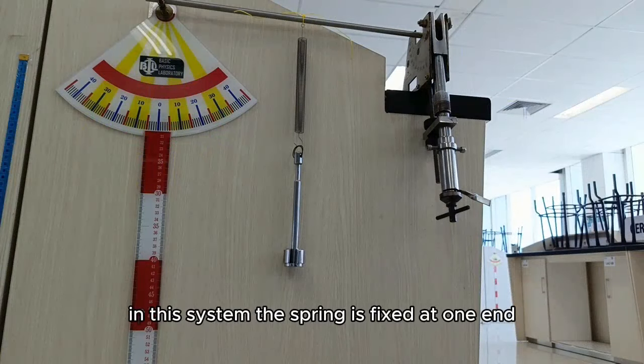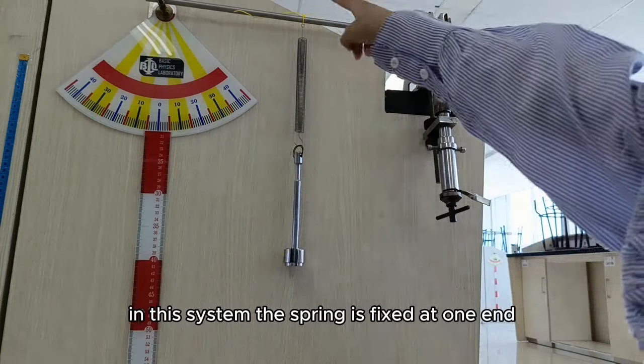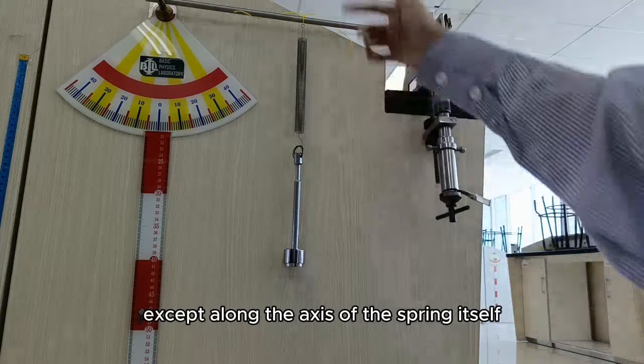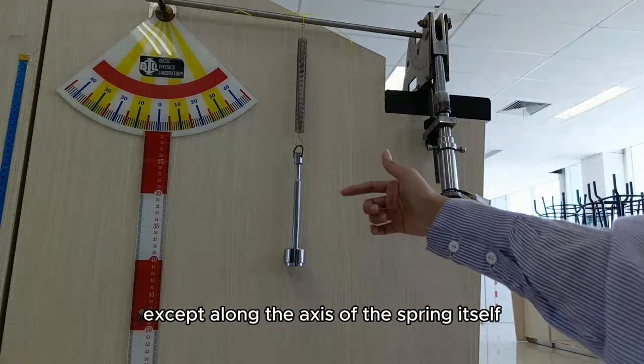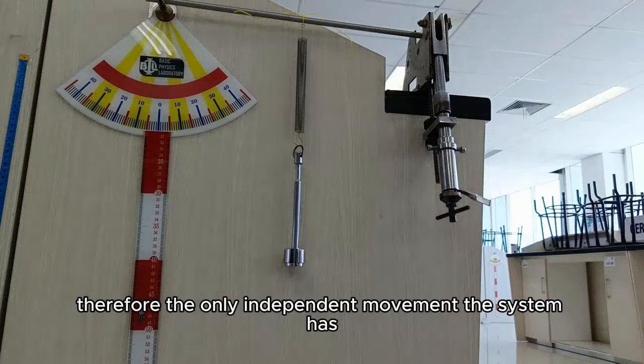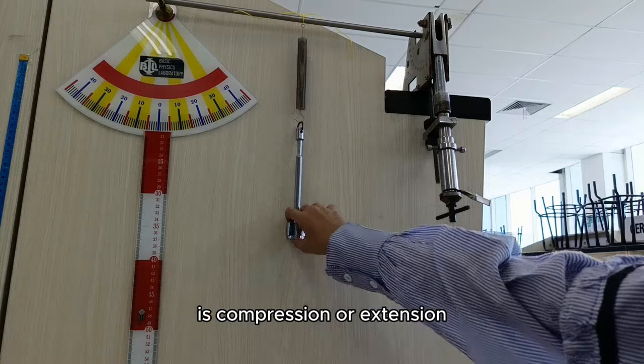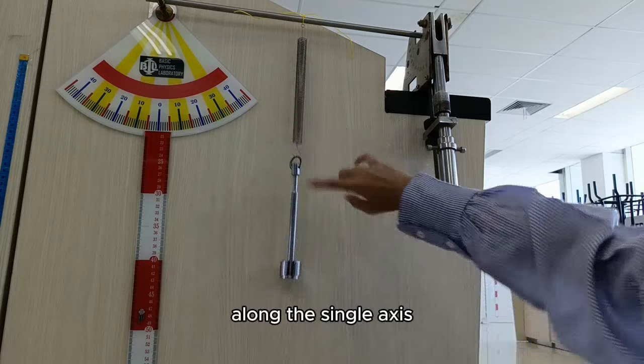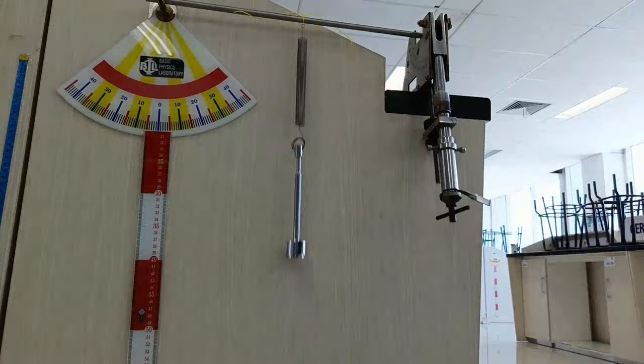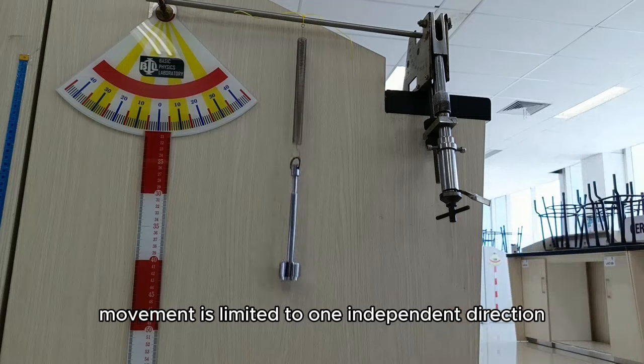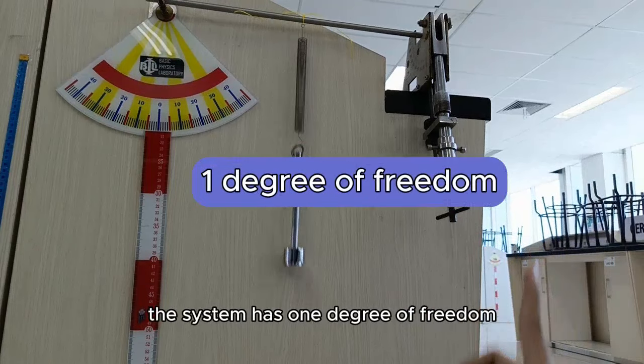In this system, the spring is fixed at one end, restricting its movement in all directions except along the axis of the spring itself. Therefore, the only independent movement the system has is compression or extension along the single axis. Since the spring's movement is limited to one independent direction, the system has one degree of freedom.